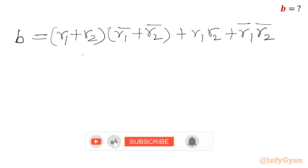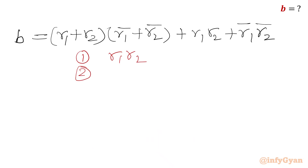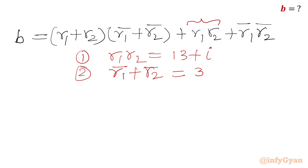Now we write equation 1: r1·r2 = 13 + i, and equation 2: r1_bar + r2_bar = 3 + 4i, which we will substitute into the expression for b. However, r1 + r2 and r1_bar·r2_bar are not directly known, so we will use properties from complex numbers.